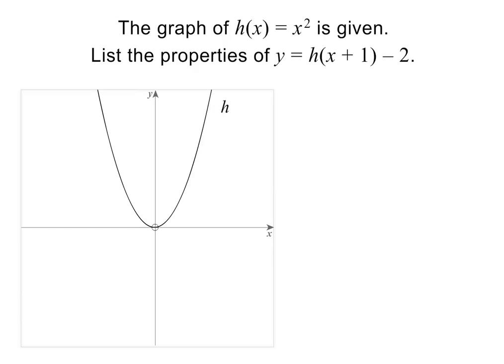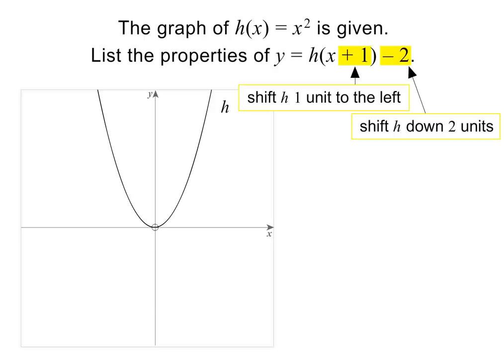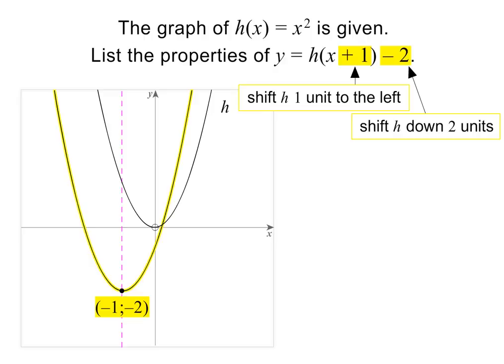Here we are given the graph of h and are asked to list the properties of y equals h of x plus 1 minus 2. The minus 2 outside the function tells us that the given parabola must be shifted two units down. The plus 1 inside the function tells us that h of x must be shifted one unit to the left. In other words, we need to shift the given parabola two units down and one unit to the left, and then find its properties.